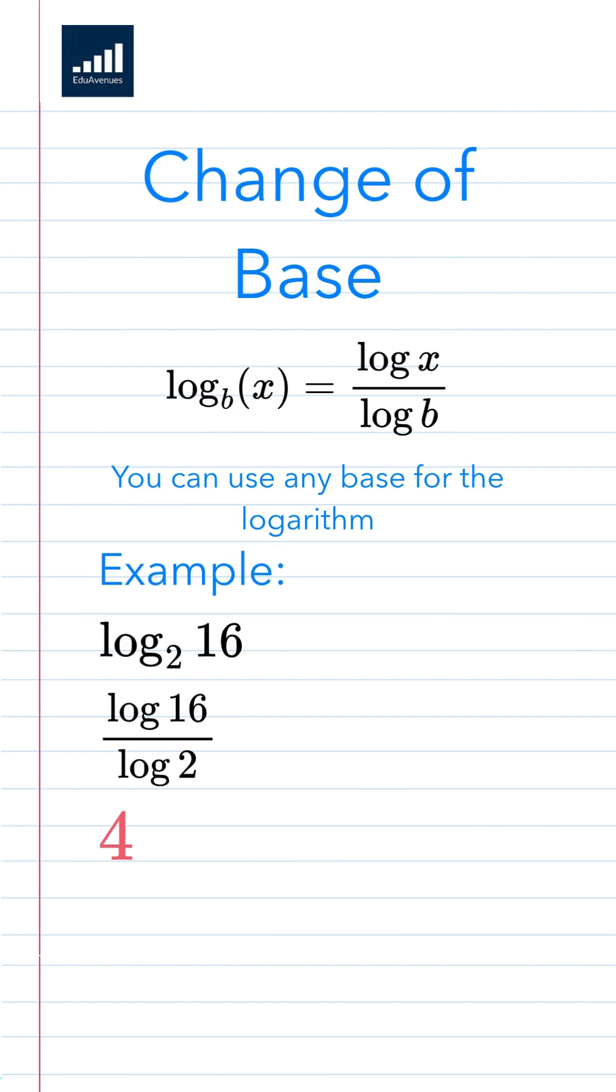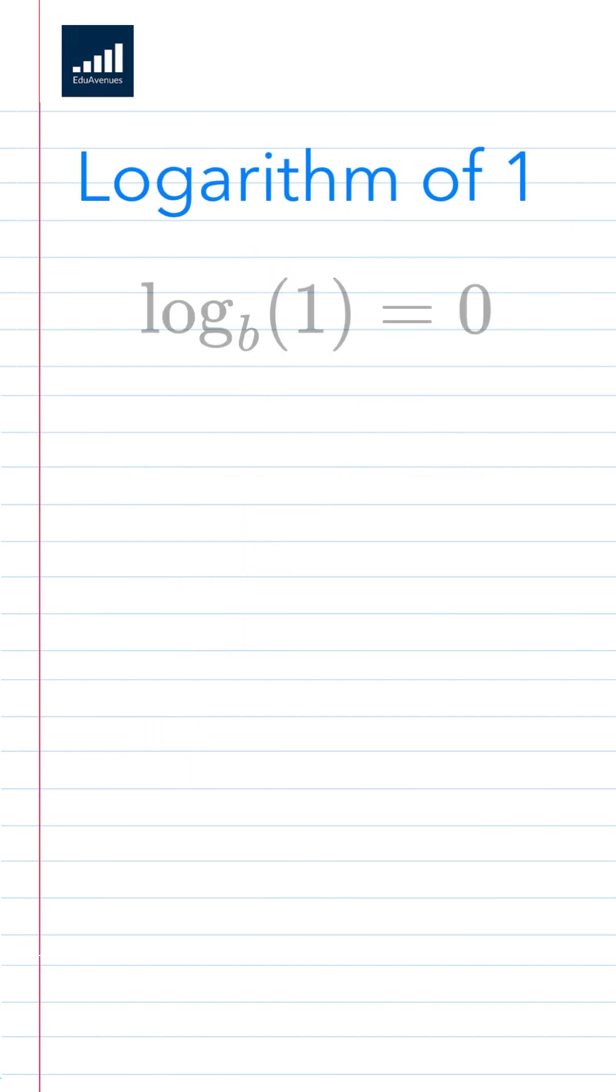Now we're going to be talking about two key identities, the first of which is the logarithm of 1. Log base b of 1 is always equal to 0 because anything to the 0th power is 1. Here's our example.